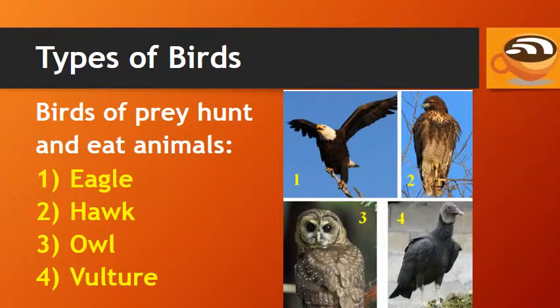Birds of prey hunt and eat animals, like the eagle, hawk, owl, and vulture. The vulture is a scavenger — it eats dead animals.